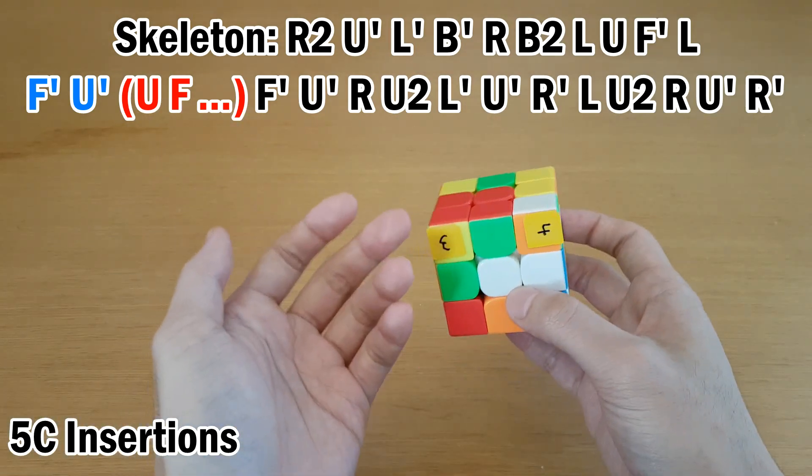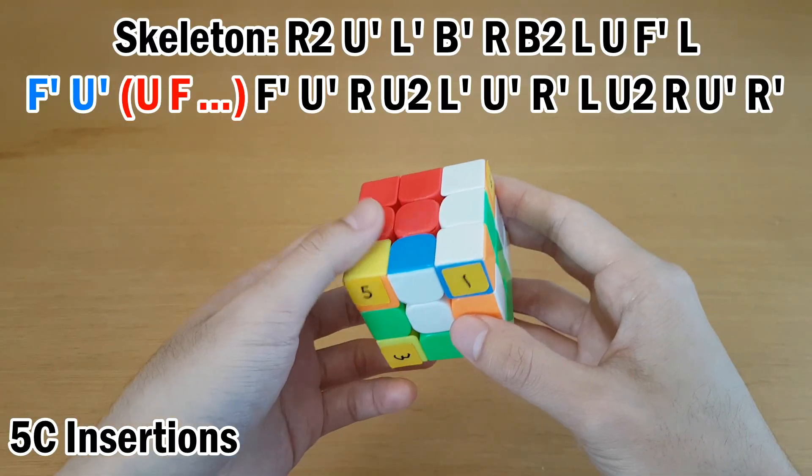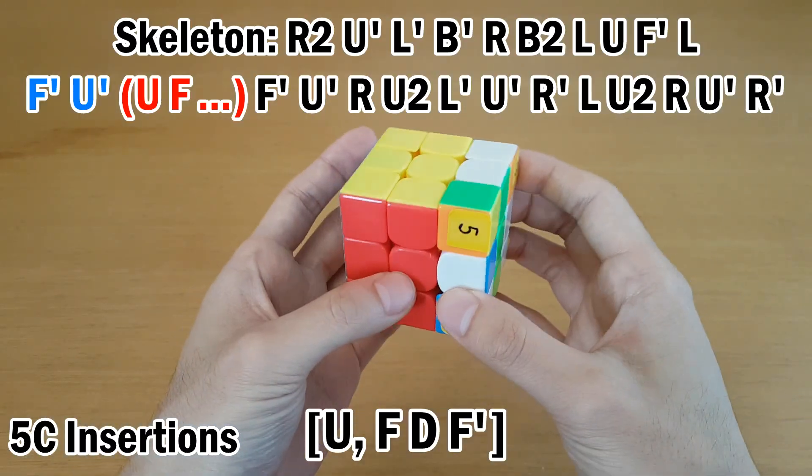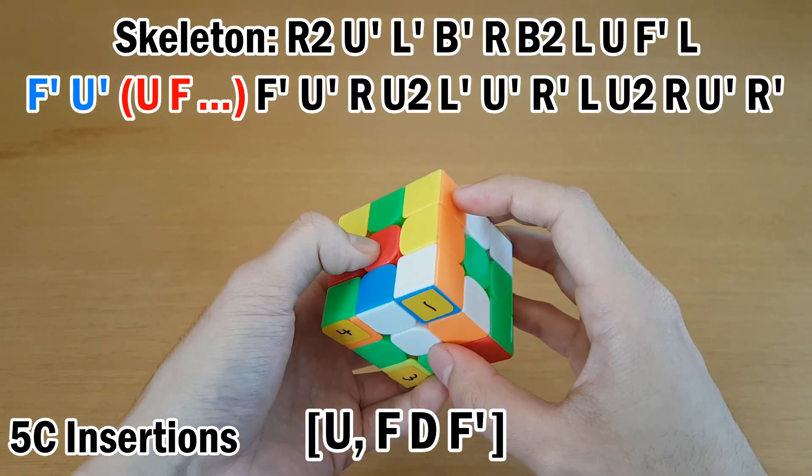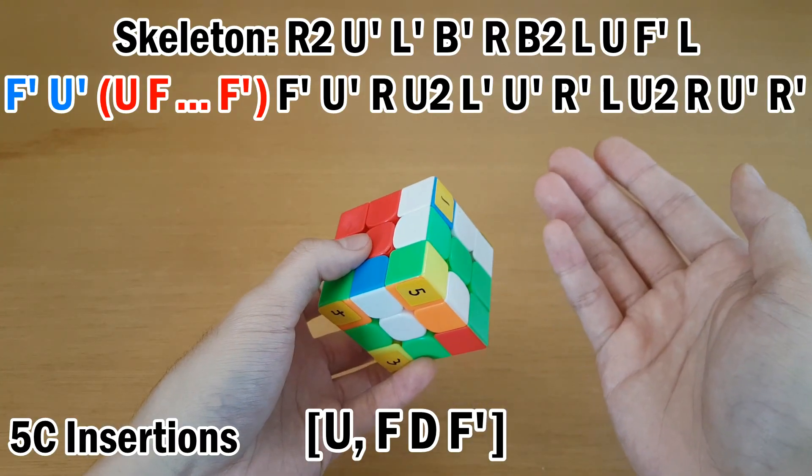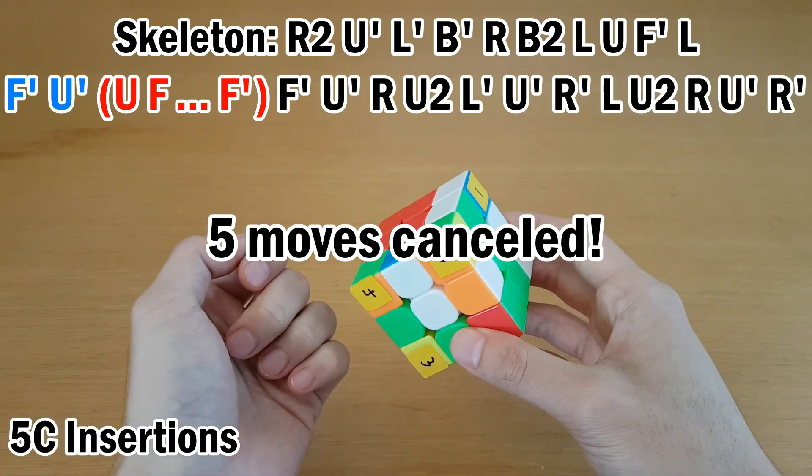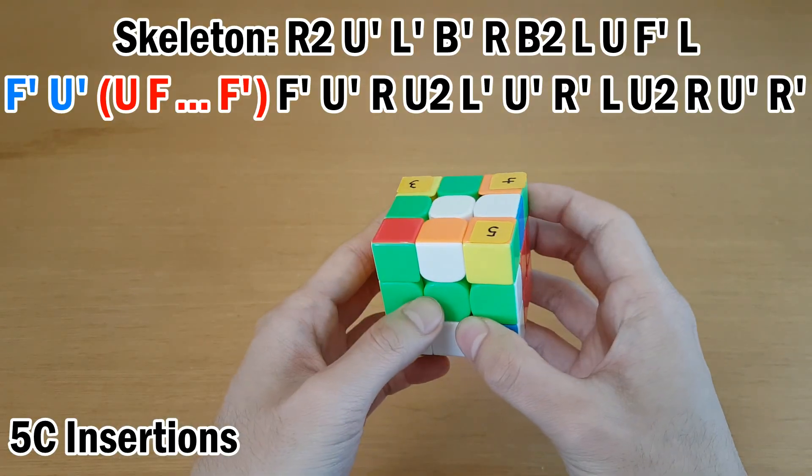I'll just see how many moves this actually cancels in total. So if I do U F D F prime U prime F D prime F prime, the next move coming up is also F prime. So F prime F prime makes F two and that cancels another move. But here what I do is go through the rest of the skeleton and see what I get.